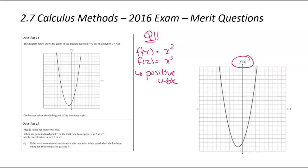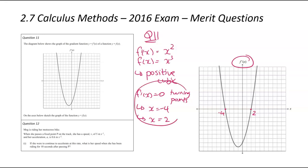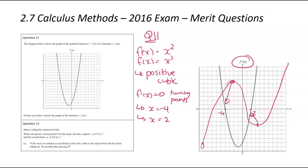The other information comes from the graph itself: we can see when the gradient is equal to zero, which tells us where the turning points are. From the graph, the turning points occur when x equals negative 4 and when x equals positive 2. We'll use these two features to draw the original function.